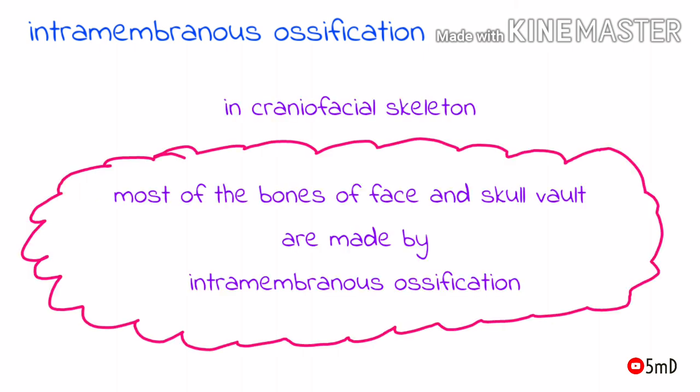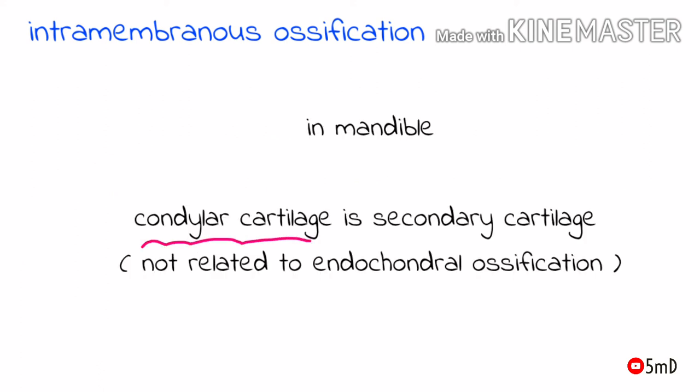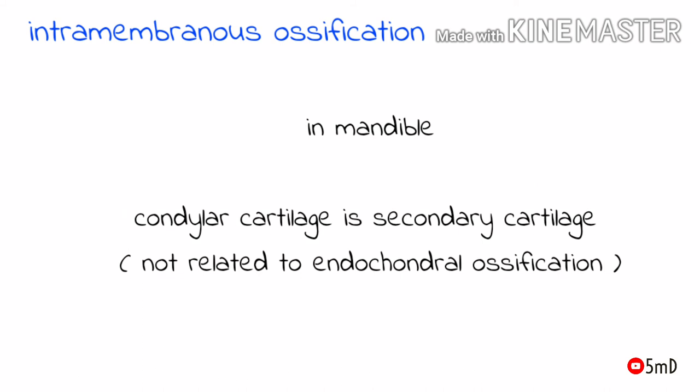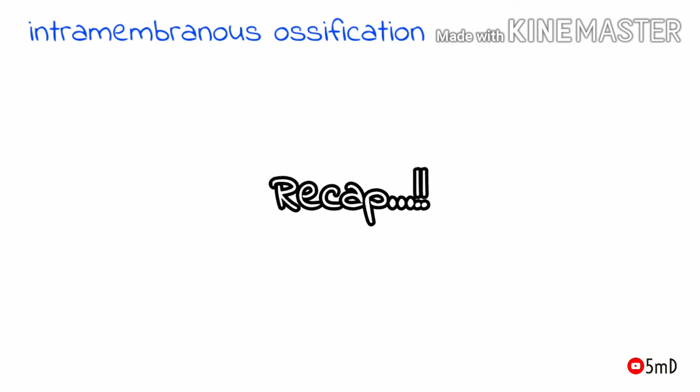In the craniofacial skeleton, most bones are membranous bones — for example, the mandible. However, the mandible and some other membranous bones contain cartilages like the condylar cartilage, but these are secondary cartilages, which are in no way related to the primary cartilage seen in endochondral ossification.